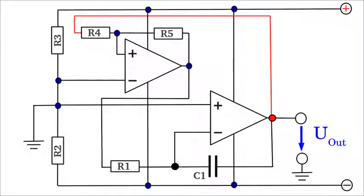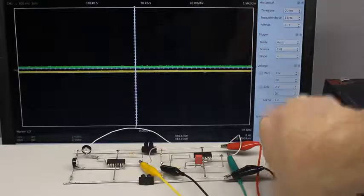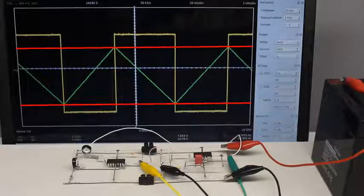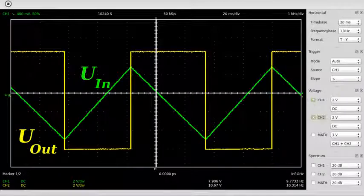The output signal of the integrator is connected to the input terminal of the non-inverting Schmitt trigger. The output of the Schmitt trigger jumps to the positive supply voltage whenever the output of the integrator reaches the upper threshold. Now the capacitor gets charged with reverse polarity until the output of the integrator reaches the lower threshold. The Schmitt trigger then jumps to the negative supply voltage, which is why the output voltage of the integrator is increasing again. The yellow curve displays the output of the Schmitt trigger, while the green curve displays the input, which is identical to the output of the integrator.